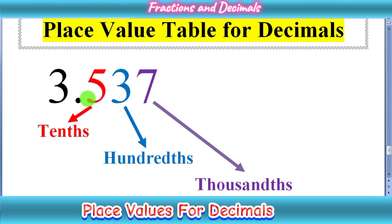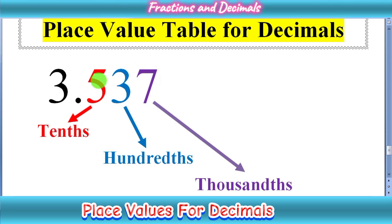But from the point to the right side, we have the fractional part or decimal part. As we learned the place values in the whole number, today we are going to learn place values for the fractional or decimal part. As you can see, the first number after the point is 5, so we can call its place value tenths. The second number is 3, so we can call its place value hundredths. And the third is 7, so we can call its place value thousandths.